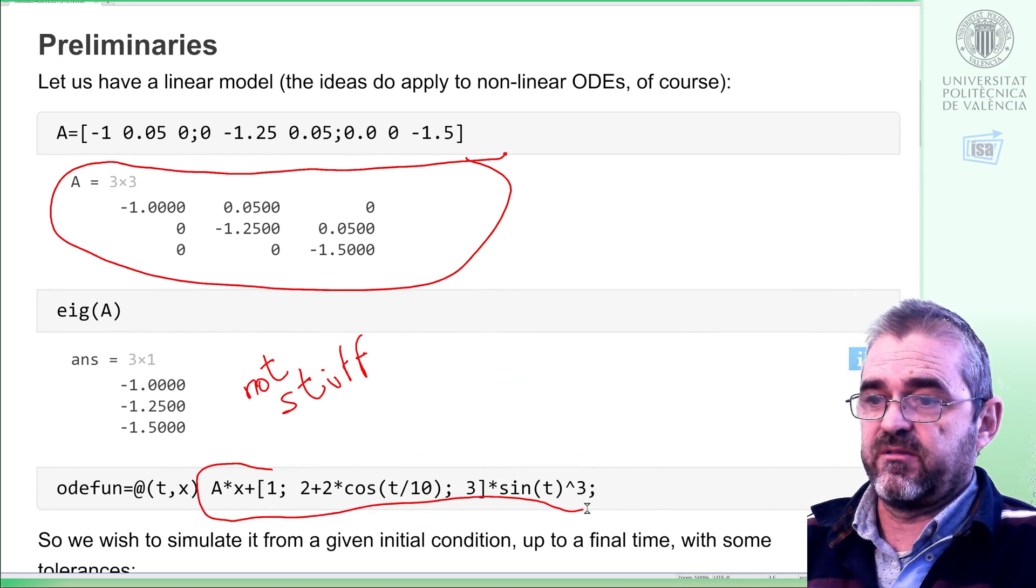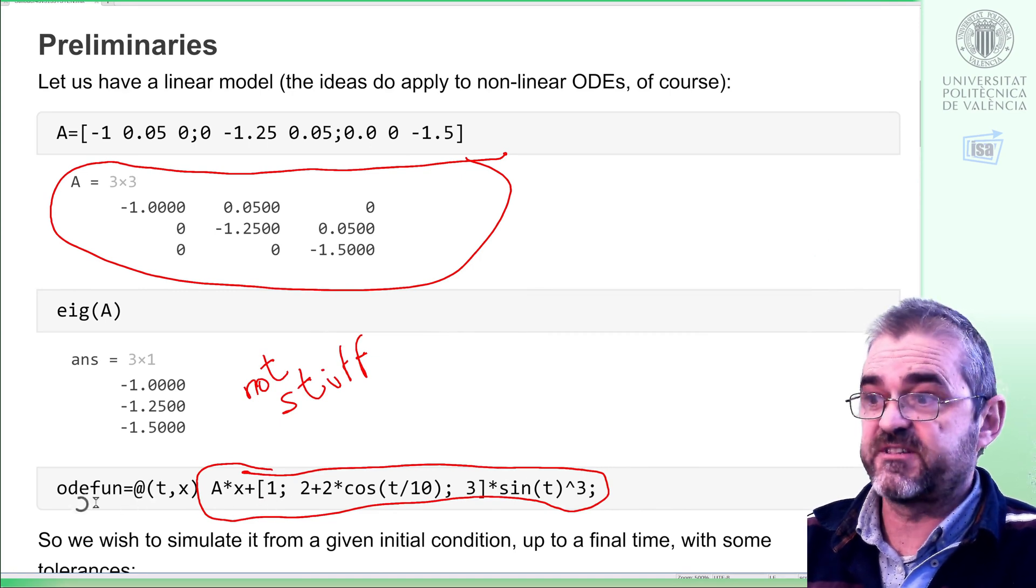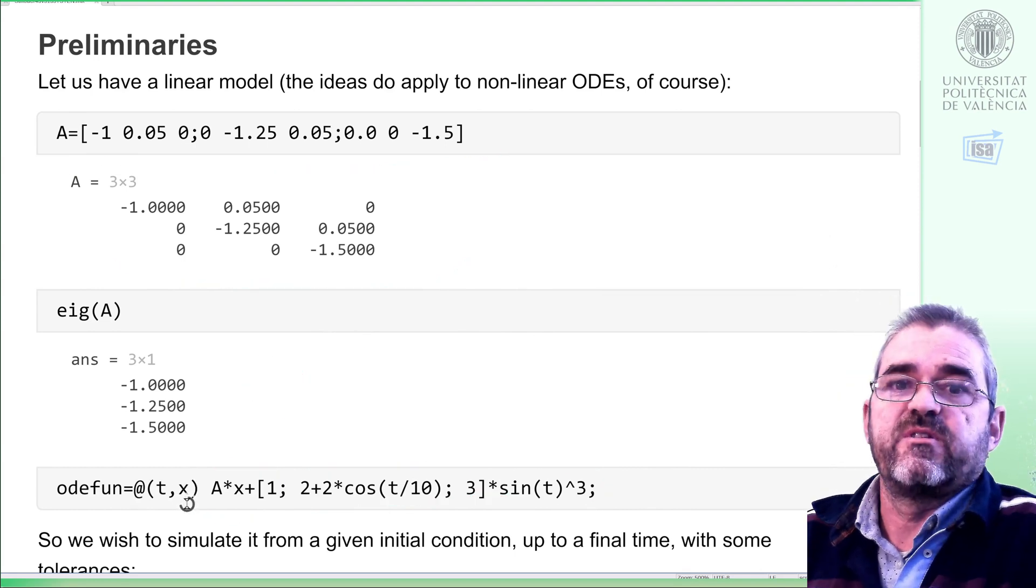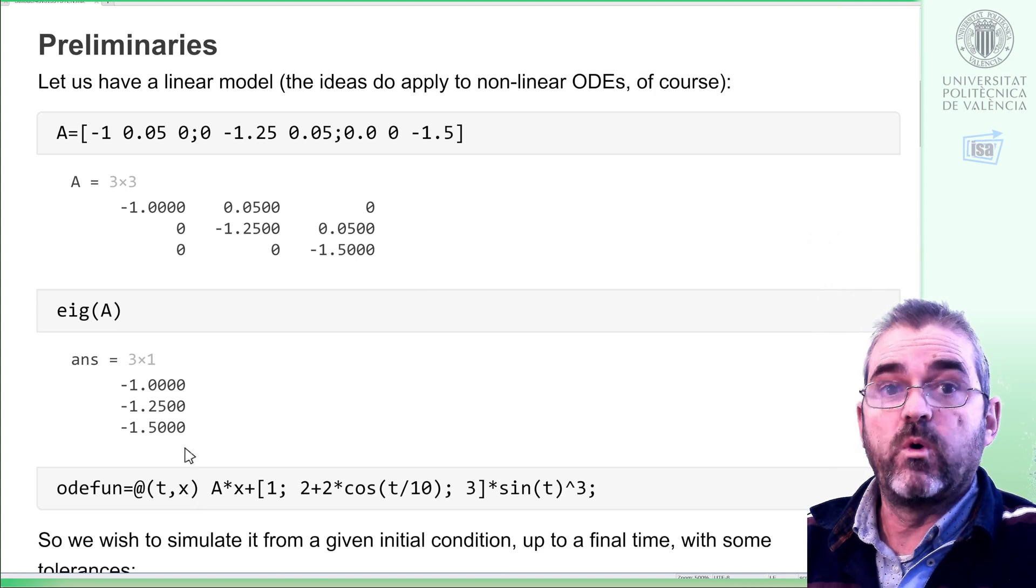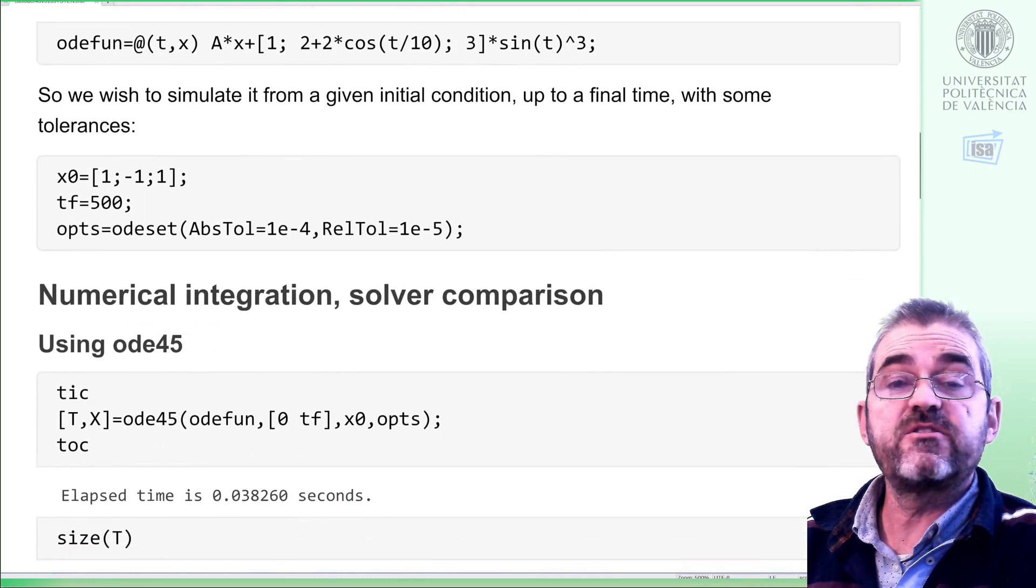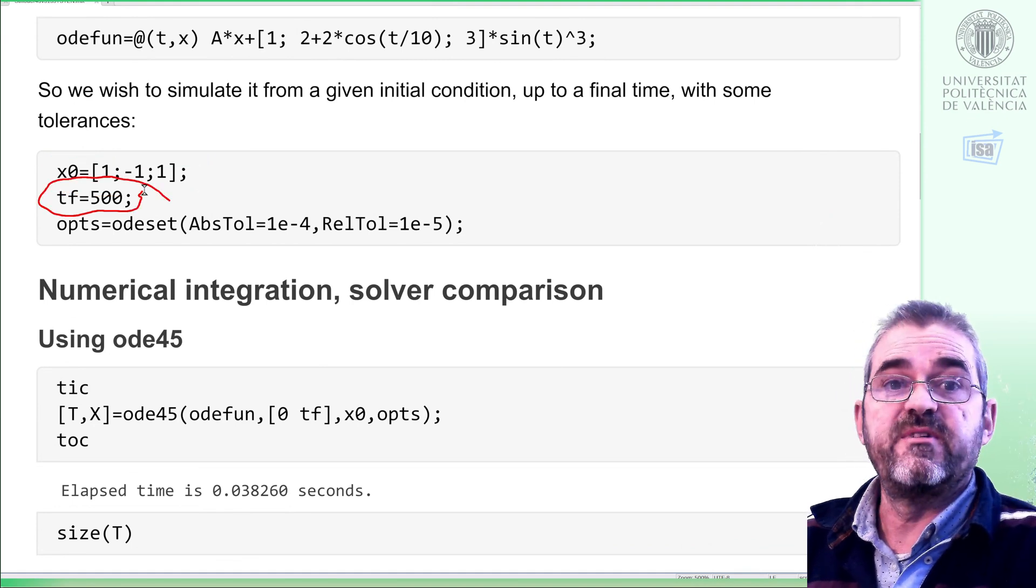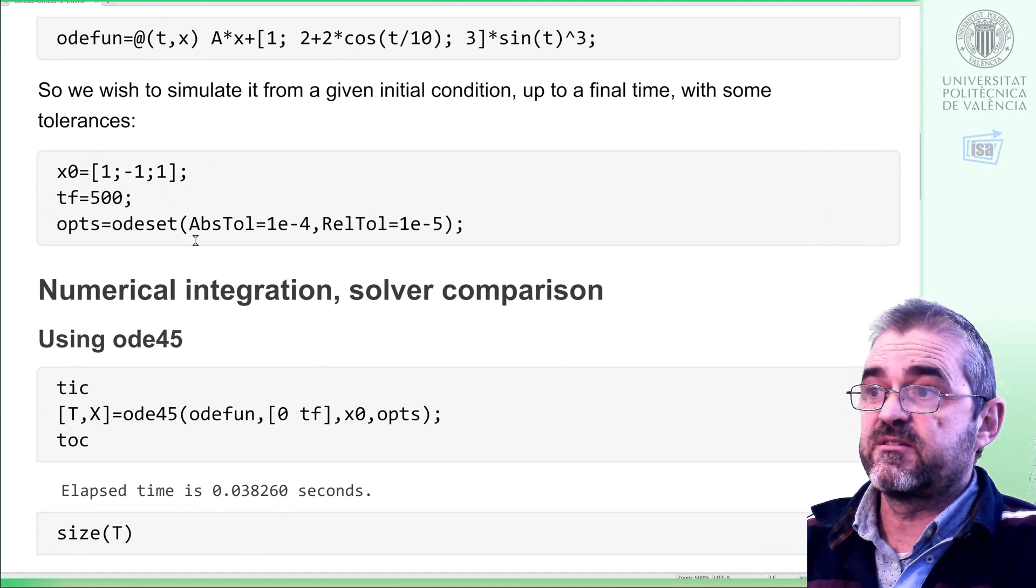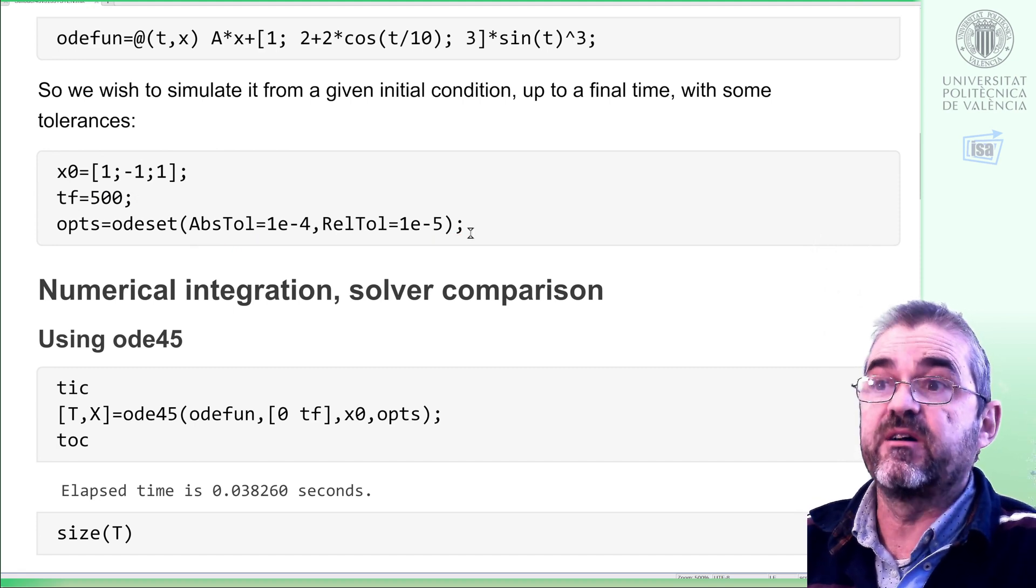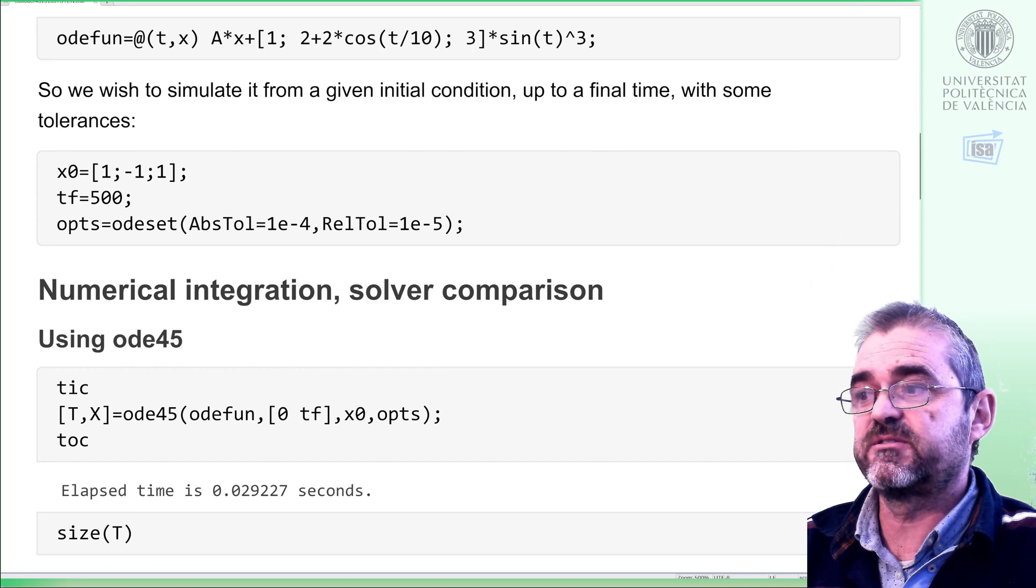So we will simulate that, and this will be the model expressed in MATLAB code as the differential equation solvers need it. The clock and state vector will be the arguments. So this will be the easy problem. All poles are similar, and we wish to simulate it from a given initial condition up to a given final time. This will be the initial condition, and this will be the final time. We will set some tolerance limits. Of course, the smaller the tolerances, the longest it will take to simulate.